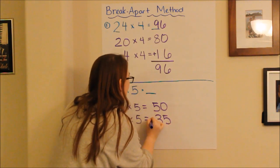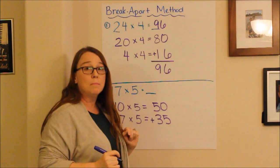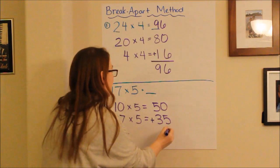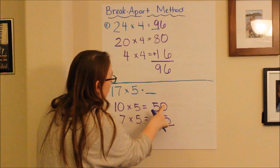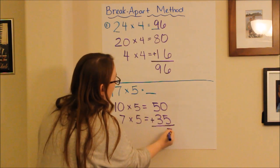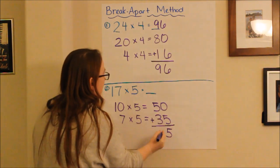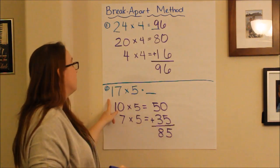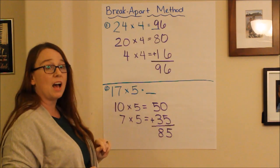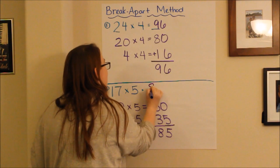To get my final answer, I add together my two partial products, and I get a final answer of, well, 0 plus 5 is 5. 5 plus 3 is 8. So, my final answer to 17 times 5 would be 85.